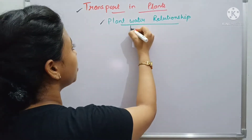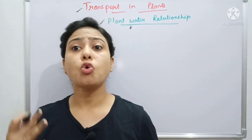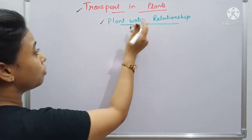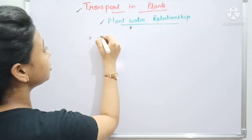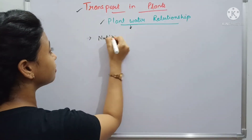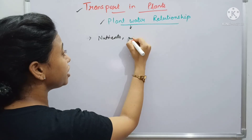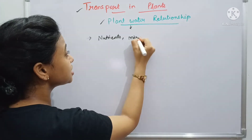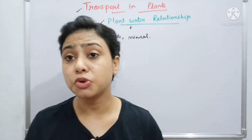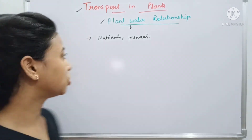Let's look at plant-water relationship. Water performs so many roles in plants. First, water is the medium for the transport of nutrients and various minerals — it is responsible for transporting these nutrients to the plant.